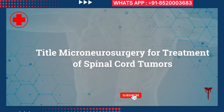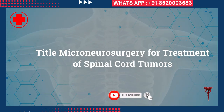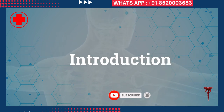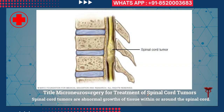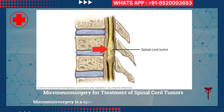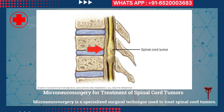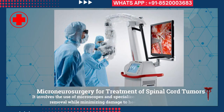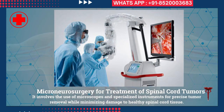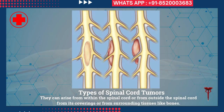Micro neurosurgery for treatment of spinal cord tumors. Introduction: spinal cord tumors are abnormal growths of tissue within or around the spinal cord. Micro neurosurgery is a specialized surgical technique used to treat spinal cord tumors, involving the use of microscopes and specialized instruments for precise tumor removal while minimizing damage to healthy spinal cord tissue.